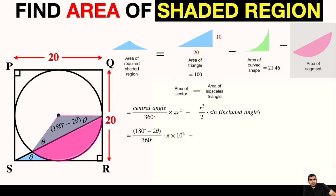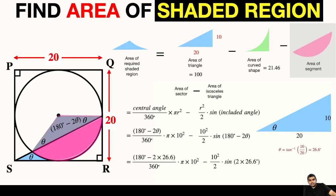This will be central angle that is 180 minus 2 theta divided by 360 degree multiplied with pi times radius is 10, so r square minus 10 square by 2 sine of 180 degree minus 2 theta. If we focus on the original triangle, theta can be written as tan inverse 10 upon 20 which on solving is equal to 26.6 degrees. We can substitute the value of theta here. So in place of 2 theta it will be 2 times 26.6 degrees and in the second term sin 180 minus 2 theta is equal to sin 2 theta. So sin 180 minus 2 theta can be written as sin 2 times the value of theta that is 26.6 degrees.